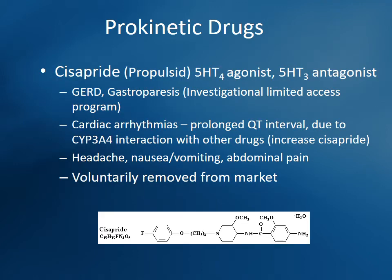Another prokinetic was cisapride (Propulsid), but it was removed from the market. It was a 5-HT3 antagonist and also an agonist of 5-HT4. It caused such significant QT prolongation and had CYP3A4 interactions that it was leading to arrhythmias and was pulled from the market. Even slightly different receptor activity can lead to significant side effects. So that one is off the market — no need to worry about it.